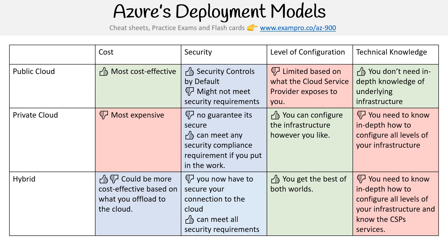If we wanted to understand the pros and cons, I have a nice little table here and we'll quickly go through it. For public cloud, it's more cost effective. Security controls are stronger by default, but some people might not find the cloud meets all their security requirements because of government and regulatory reasons — not because the cloud is not secure, but just those policies. The level of configuration is limited based on what the cloud service provider exposes to you. And for technical knowledge, you don't need to have as much in-depth knowledge of the underlying infrastructure because you're not physically setting up servers or networking.